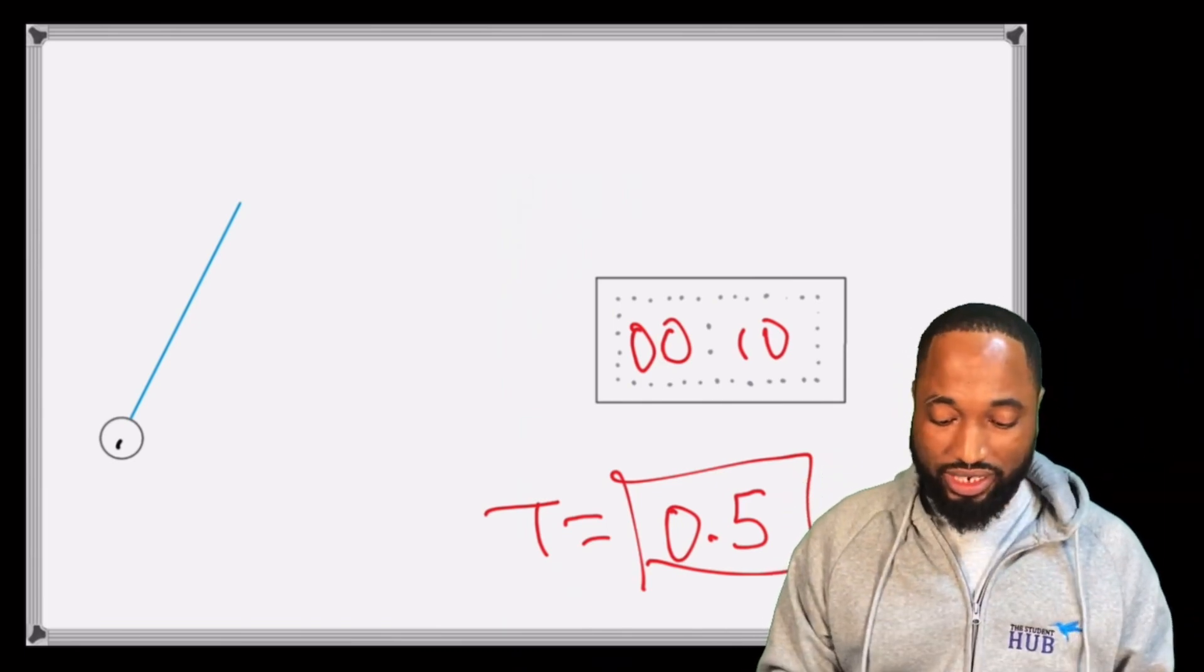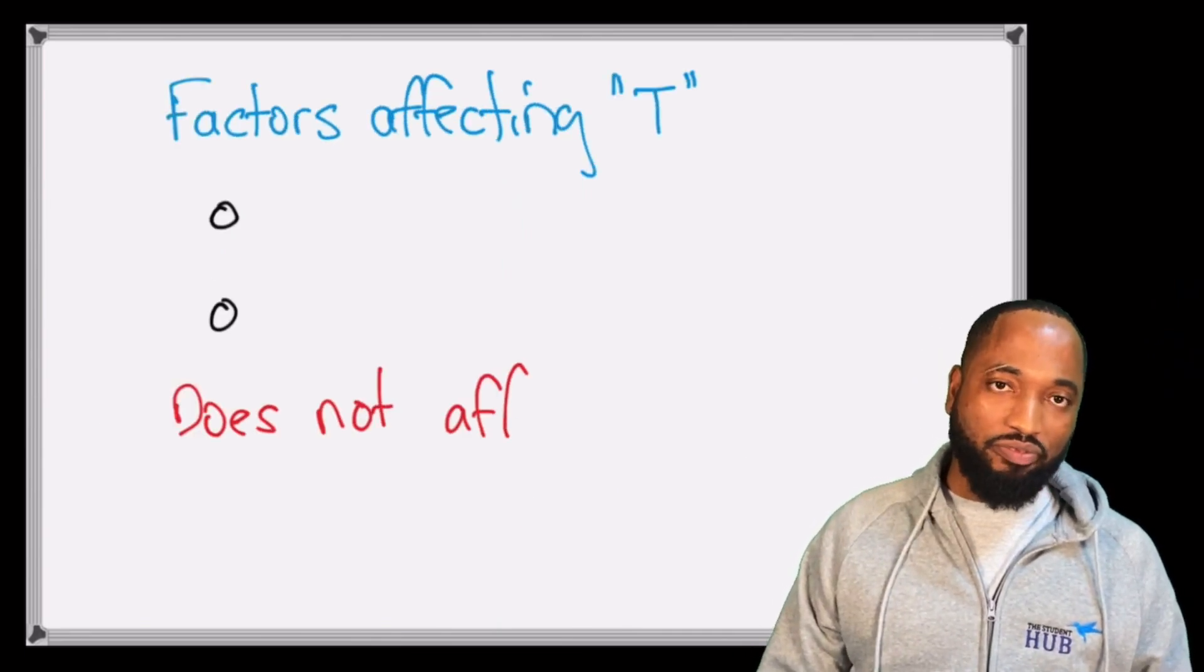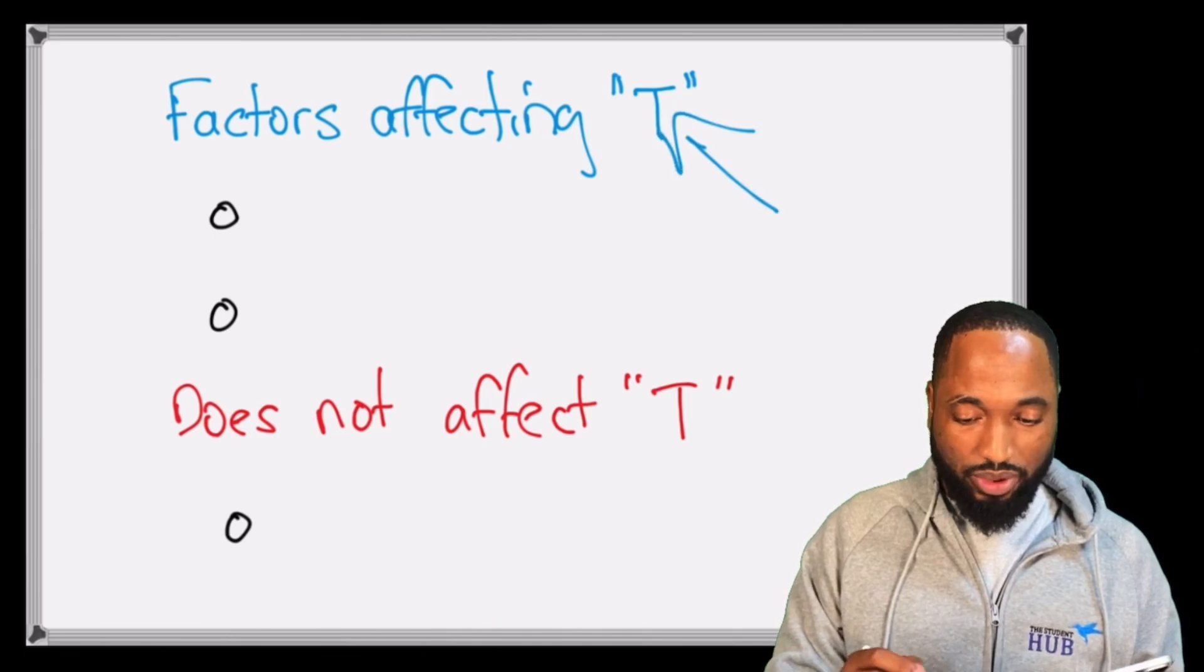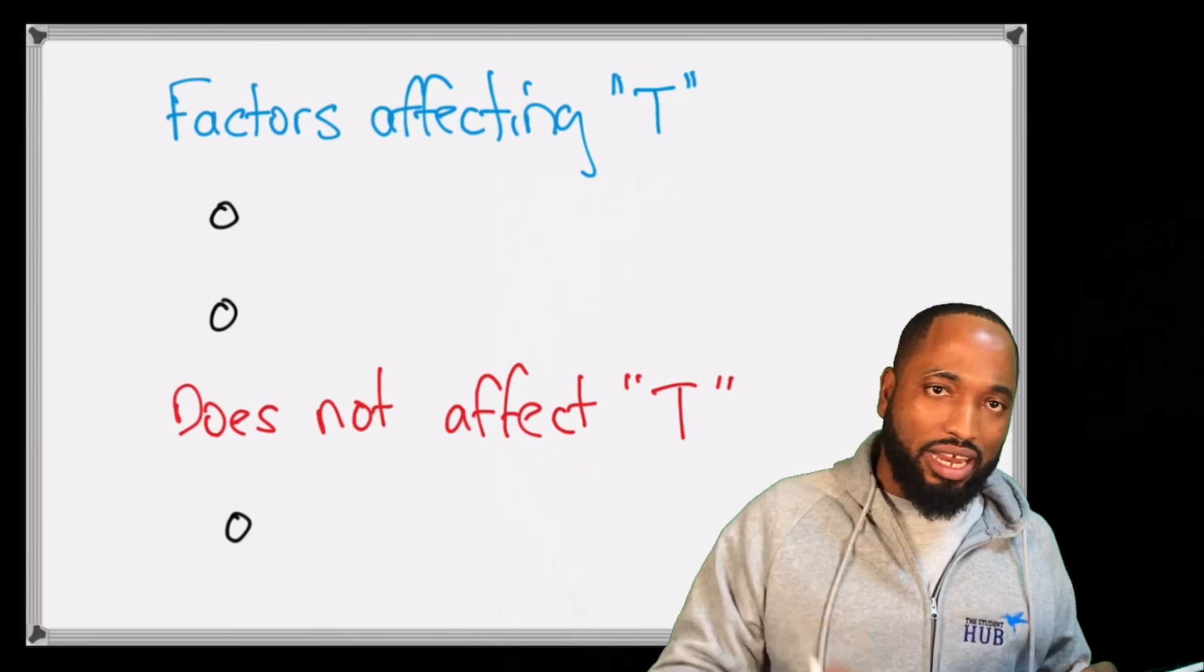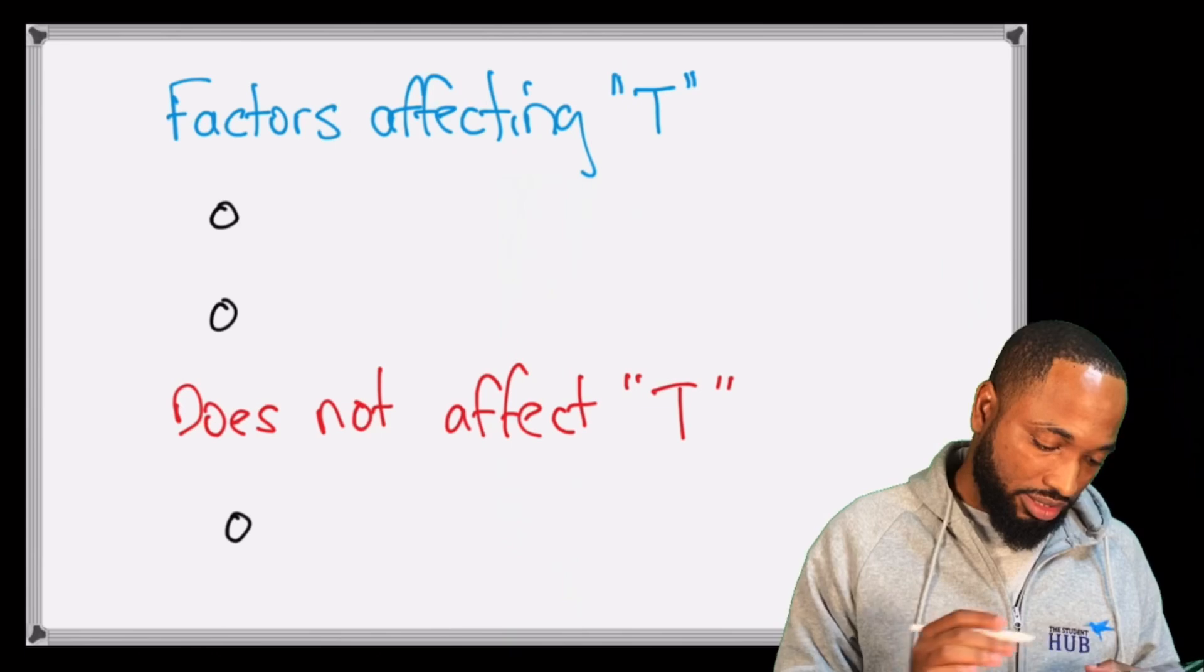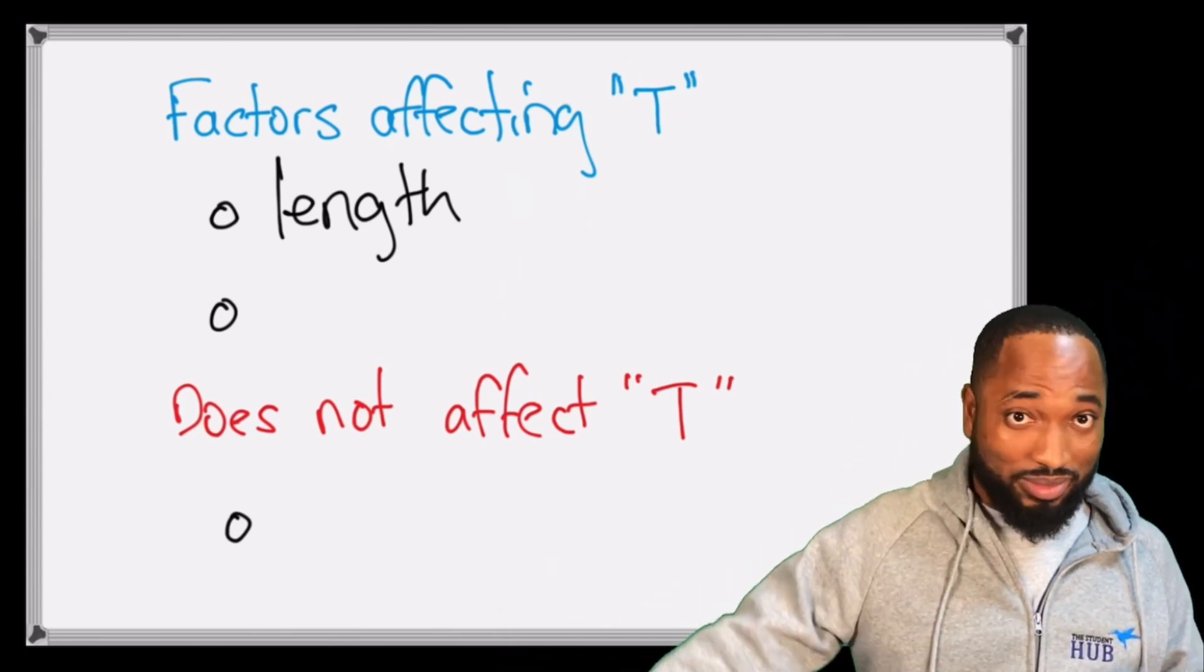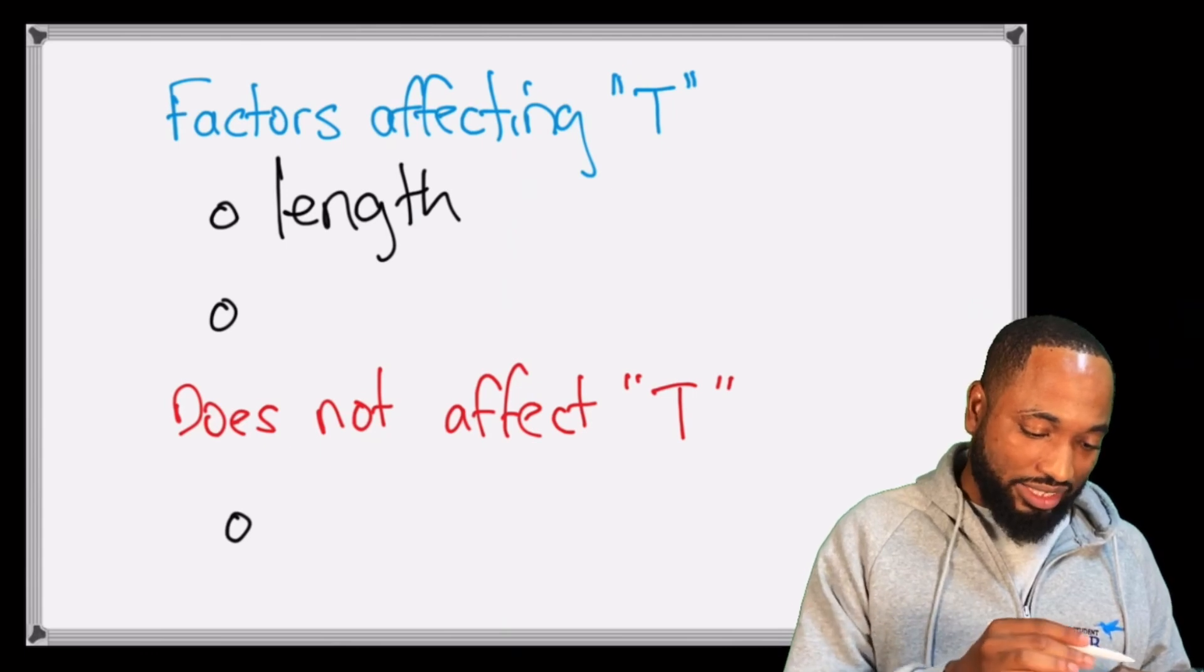What are the factors that affect T? The factors that affect T, and coincidentally what does not affect T - T here, remember, is the period. Factors that affect T: there's only one real factor that affects T in terms of your lab, and that's - do you know what it is? - that's the length of the pendulum. The shorter the pendulum, something is going to happen. The longer the pendulum, something is going to happen. So the length...